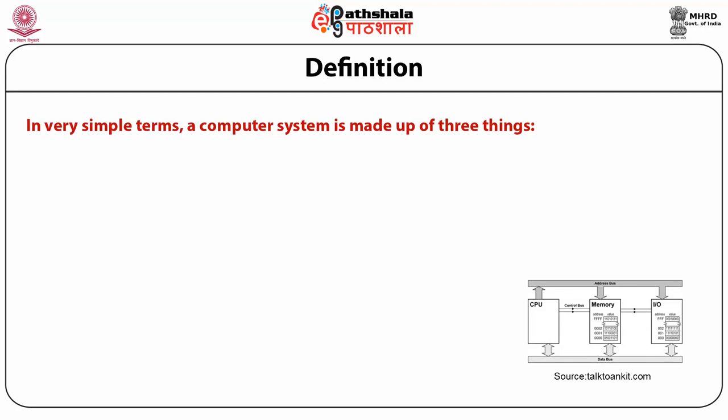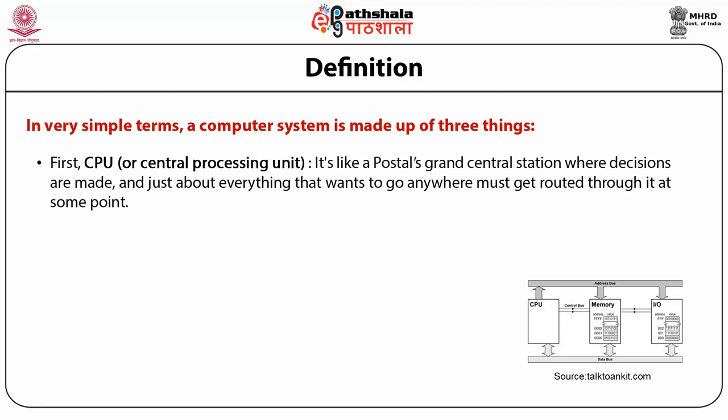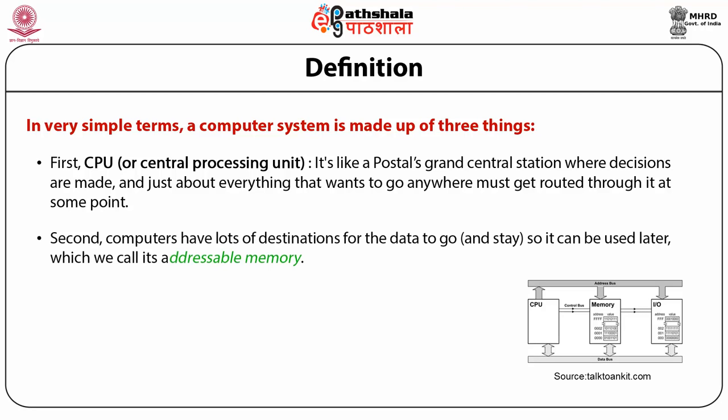The CPU is like a grand central station where decisions are made and everything that wants to go anywhere must be routed through it. Second, computers have many destinations for data to go and stay so it can be used later — these are called address memory, like houses with physical addresses where pieces of data live when not being processed by the CPU.